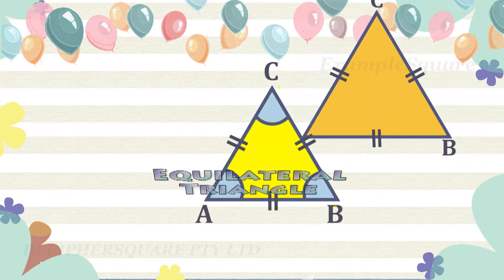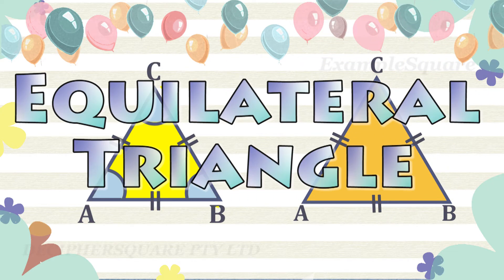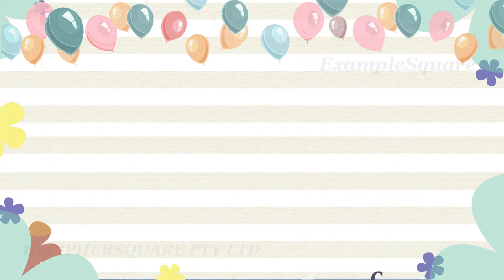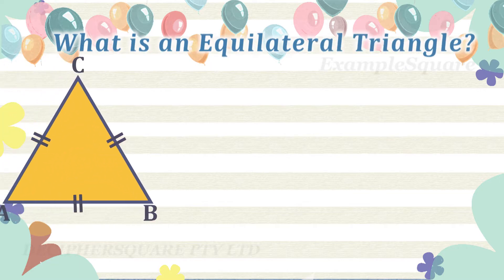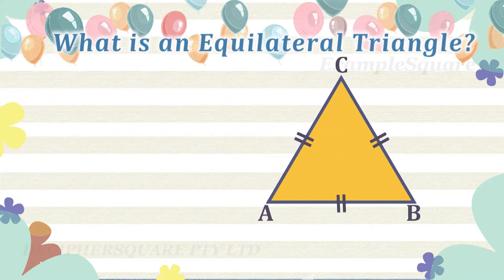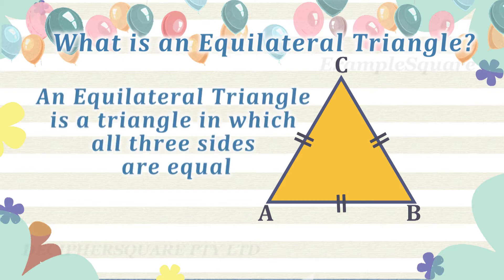Equilateral Triangle. What is an equilateral triangle? A triangle is a polygon with three sides. An equilateral triangle is a triangle in which all three sides are of equal length.